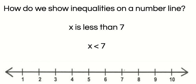So what we want to do to show that on the number line is we put an open circle at the number 7. The open circle means it cannot be equal to 7.